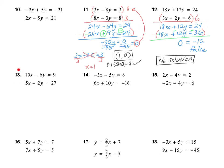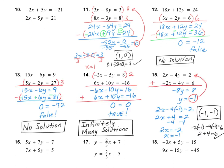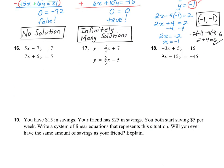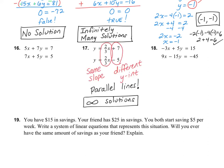Please pause the video and do numbers 13, 14, and 15 on your own — you can skip number 10. For number 13, I got no solution. For number 14, infinitely many solutions. And for number 15, (-1, -1). Please pause to check your work and fix any mistakes. I just want to quickly do number 17: I notice the same slope and different y-intercepts, so the lines are parallel and there are infinitely many solutions.